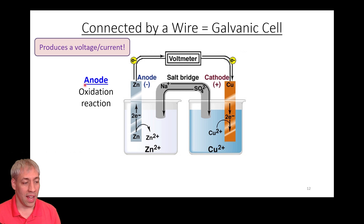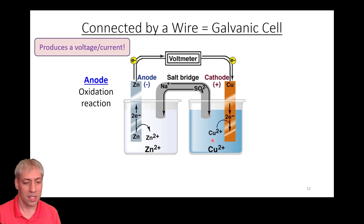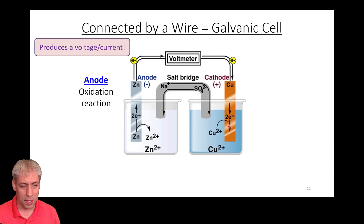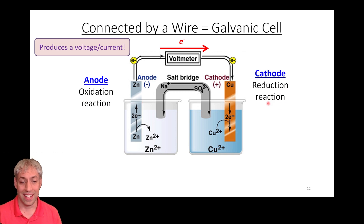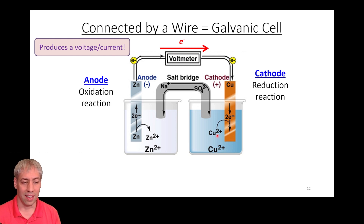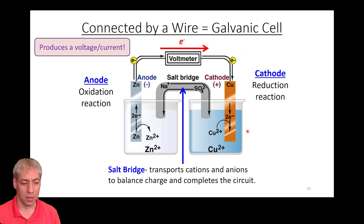On one side we have the anode, where the oxidation reaction occurs — zinc gives up two electrons, going from Zn to Zn²⁺. On the other electrode, the cathode, Cu²⁺ gains those electrons and becomes copper solid — that's reduction. So we call the oxidation side the anode and the reduction side the cathode. Electrons travel through the wire from the anode to the cathode.